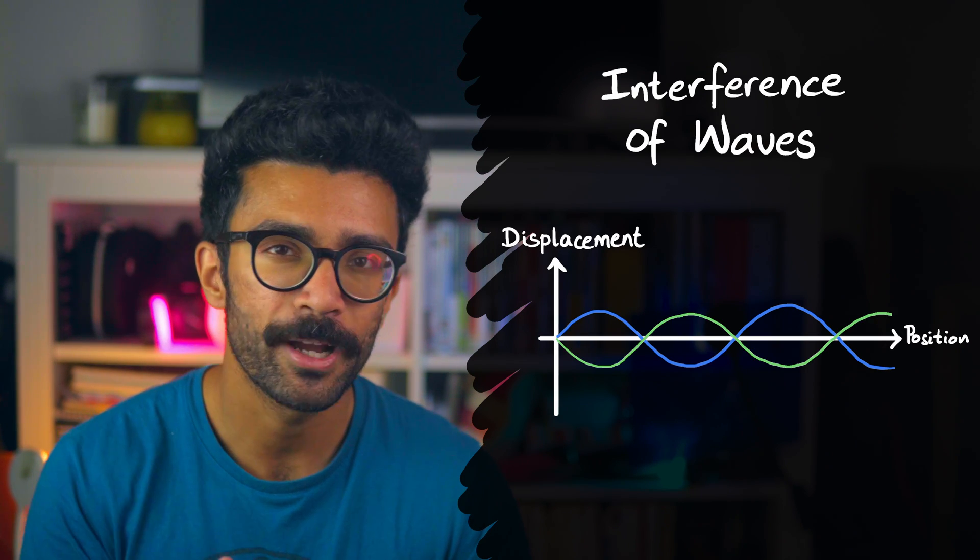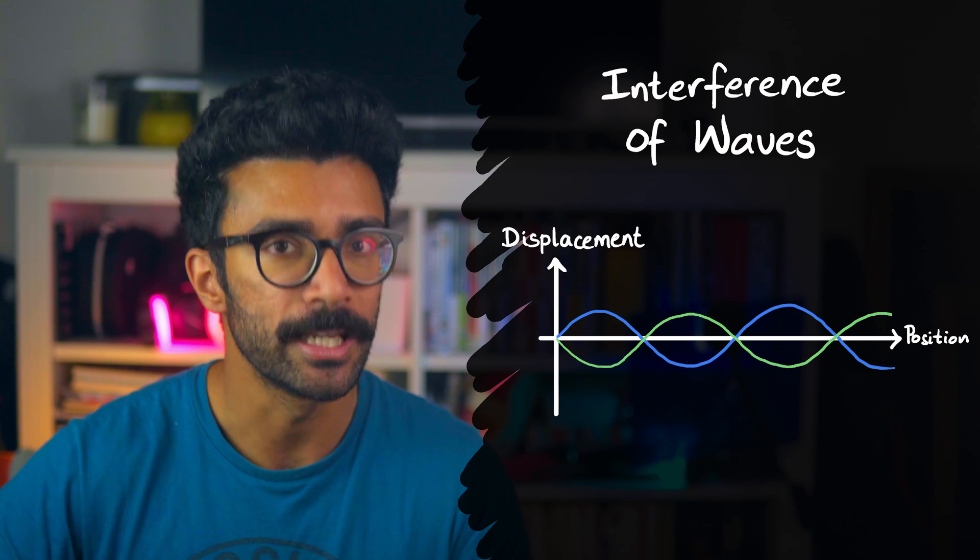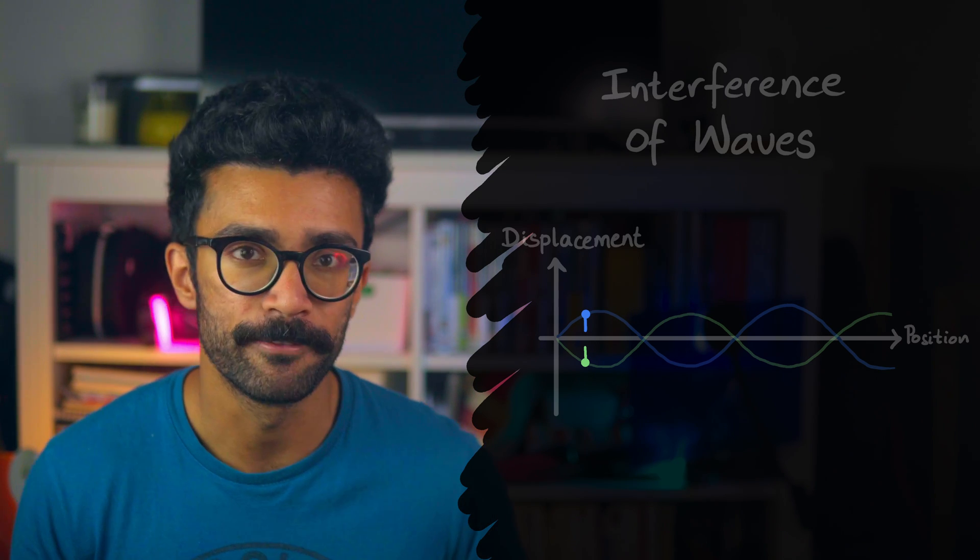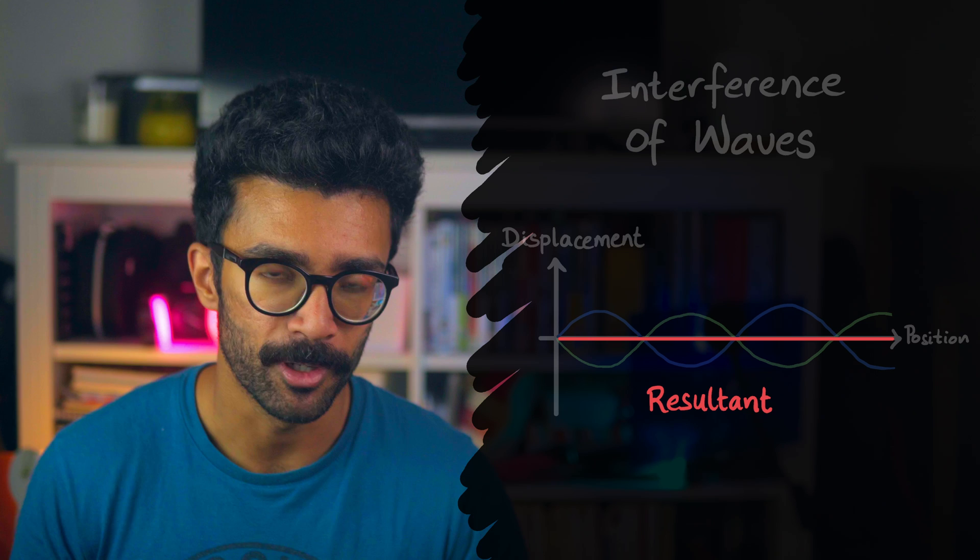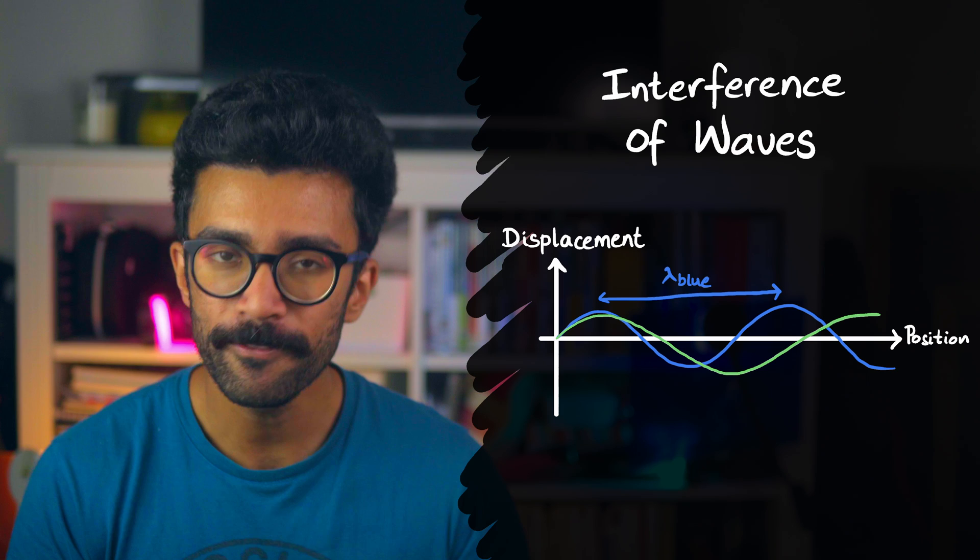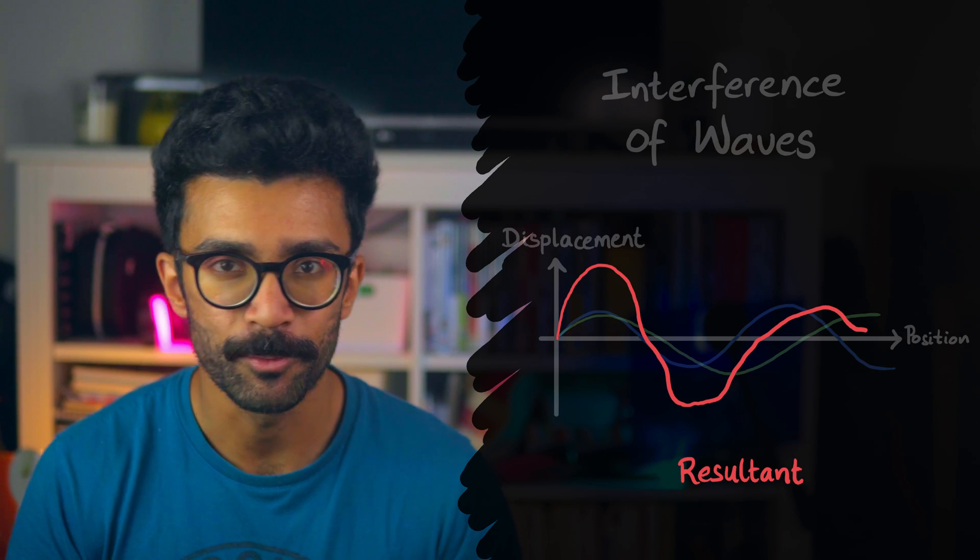Basically, when two waves of the same kind pass through the same space at the same time, they combine together or interfere. At each point, we can just add the amplitudes of the waves being combined to find the amplitude of the resulting wave. And if you add together waves that have slightly different wavelengths to each other, they interfere to give these weird resulting wave shapes.